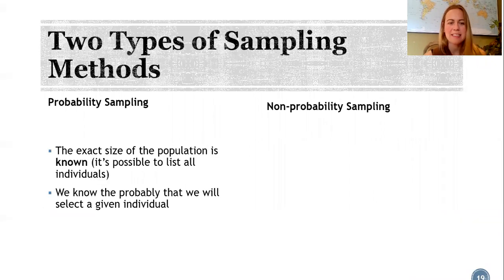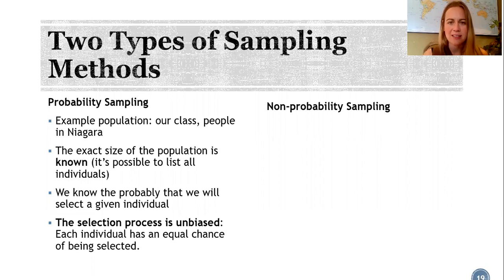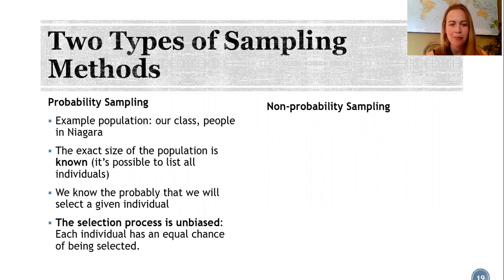Probability sampling is when the exact size of the population is known. It's possible to list all of the people in that population, and so we know the probability that we'll select a particular person. For example, if we're interested in our class, each student has a 1 in 200 chance of being selected, or maybe 1 in 450,000 for people in Niagara. As a result, the selection process is unbiased — each individual has an equal chance of being selected.